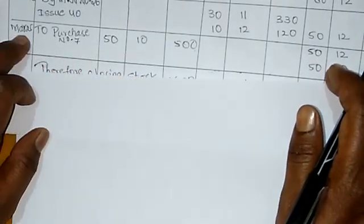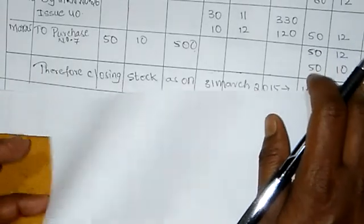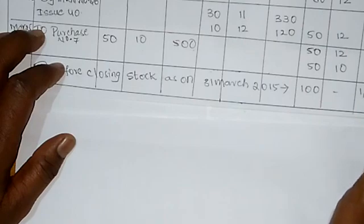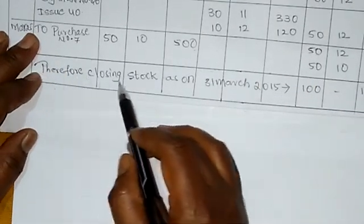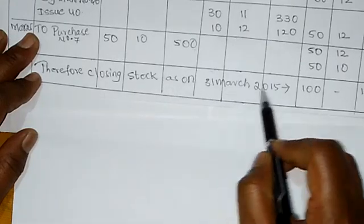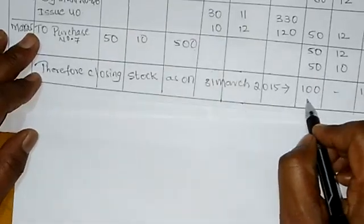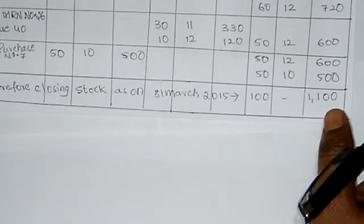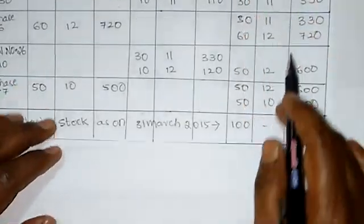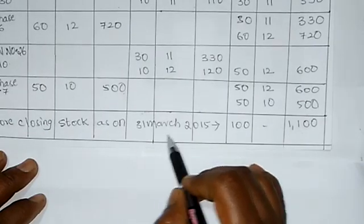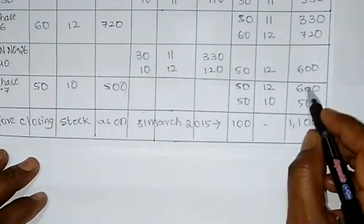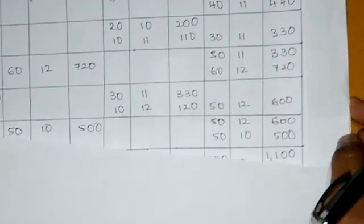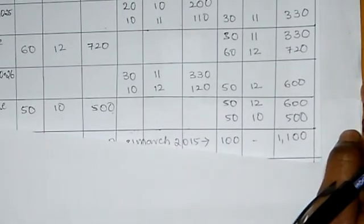Total as at March 31st: closing stock quantity 100 units, amount Rs.1100. Therefore, closing stock as on 31st March 2015 is 100 units valued at Rs.1100. This is how we solve the problem. Clear understanding of entries is now complete.